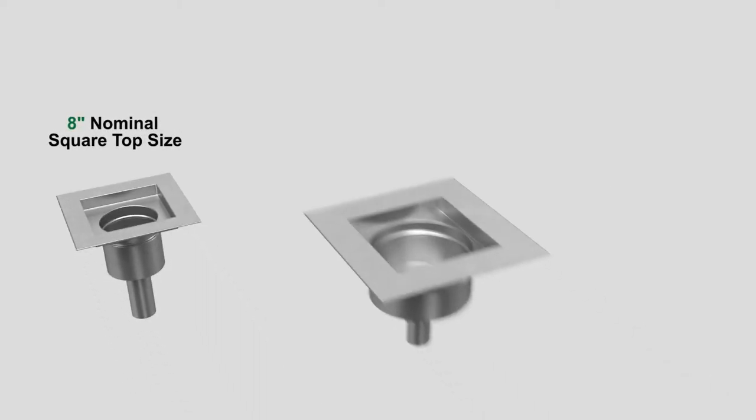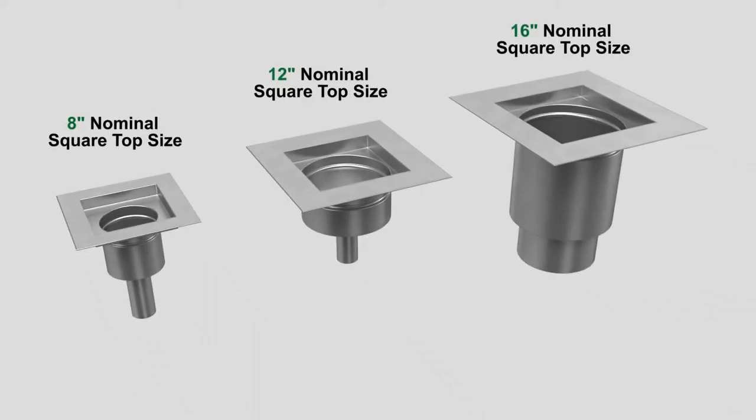Josam's retrofit liner is available in nominal 8, 12, and 16-inch square top size with depth sizes ranging from 6 to 12 inches and outlet sizes ranging from 2 to 8 inches.